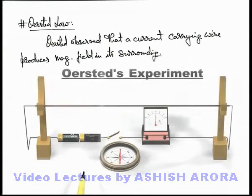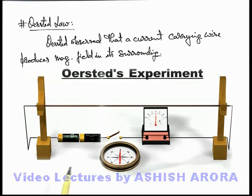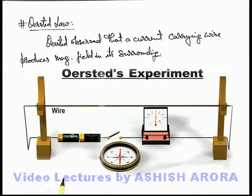Let's have a look at the Oersted experiment. This is the experimental setup of the Oersted experiment, in which there is a platform above which a wire is held in a wooden frame, and it is connected with a battery and a current-measuring ammeter. A compass needle is placed directly below the straight wire in the frame.